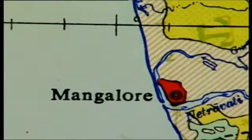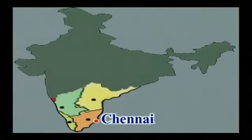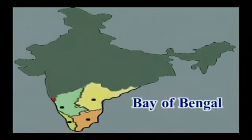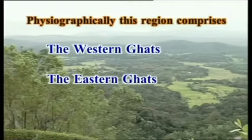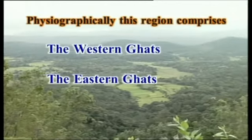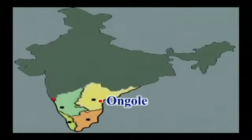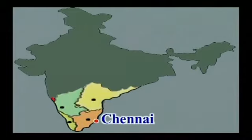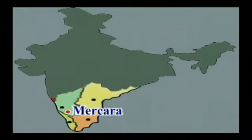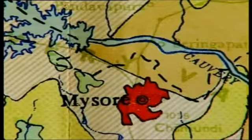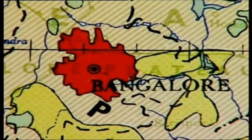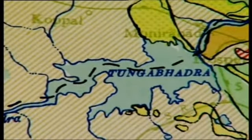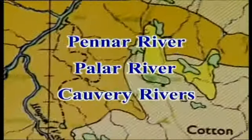Let us see the land use of the Chennai-Bangalore Plate. The distribution of land use in the Mangalore, Bangalore, and Chennai region is seen in this map. This area is bordered by the Bay of Bengal in the east and the Arabian Sea in the west. Physiographically, this region comprises the Western Ghats and the Eastern Ghats. Prominent places include Kurnool in the north, Ongole in the northeast, Panaji and Belgaum in the northwest, Bellary, Anantapur, and Chitradurga in the middle, Chennai in the east, Mangalore and Karwar in the west, Mercara in the southwest, Dharmapuri in the southeast, and Mysore and Bangalore in the south. This region is drained by the Tungabhadra, Penna, Palar, and Kaveri rivers.